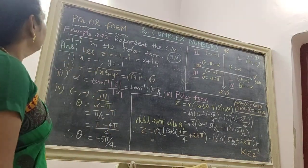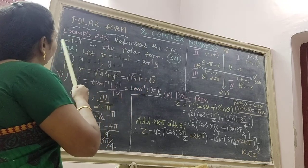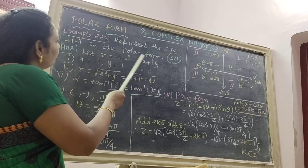Next problem, 3 more questions. Example 2.23: represent the complex number minus 1 minus i in the polar form.